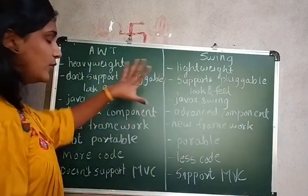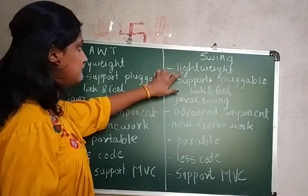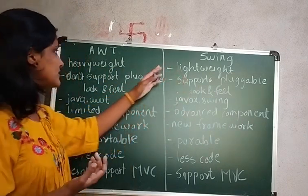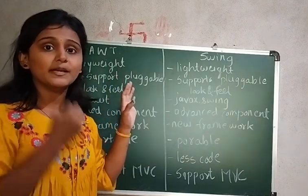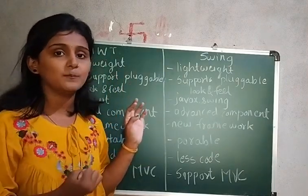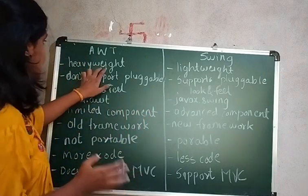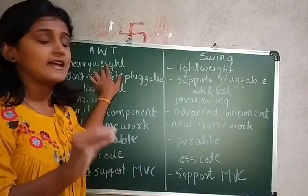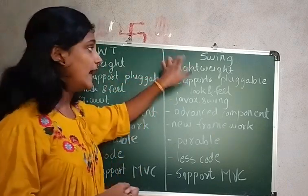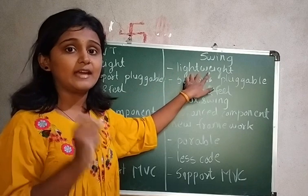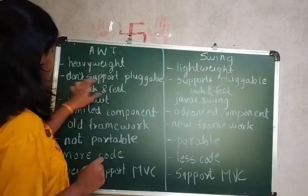The first difference is heavyweight versus lightweight. In AWT, whatever components are there, the memory required for those components is more, and hence the AWT components are heavyweight. In Swing, the memory required is less, and hence they are lightweight.